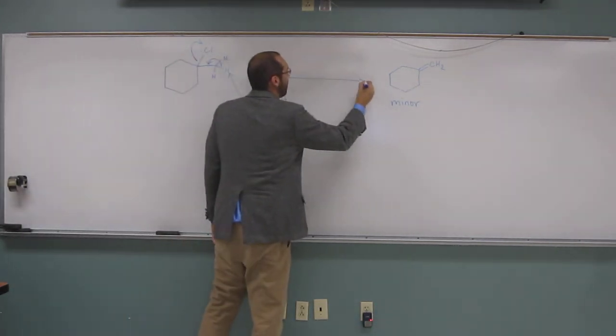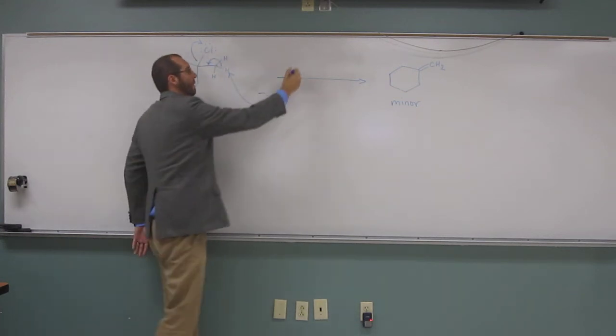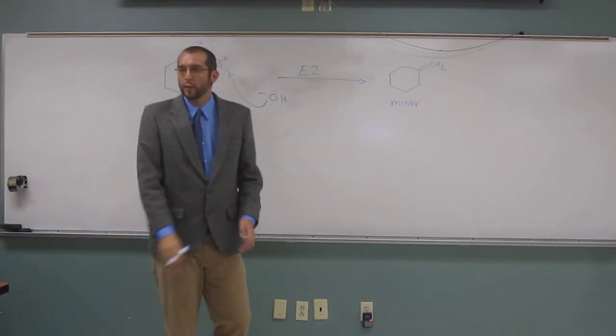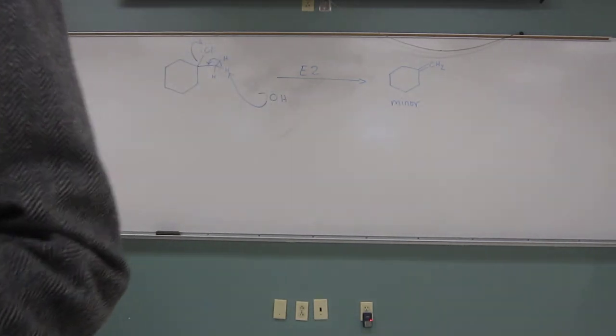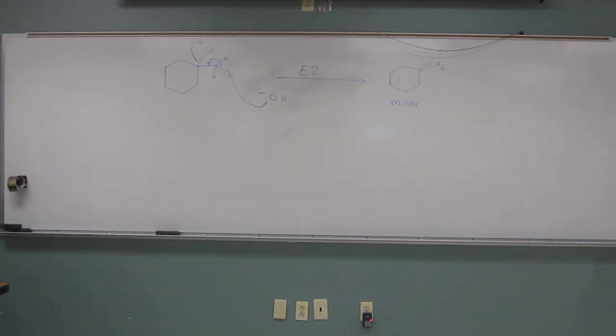And, ta-da, that's the step, that's it, E2. So it's just a one-step mechanism, but you, of course, have to actually draw structures that exist. You have to draw arrows that go the right way, not the wrong way.